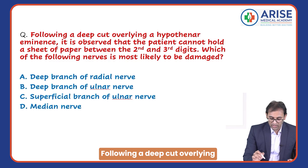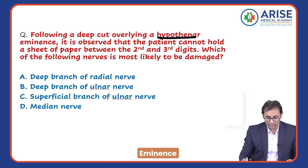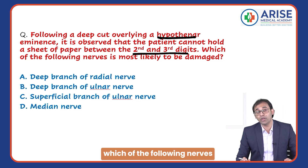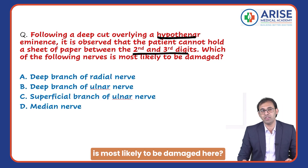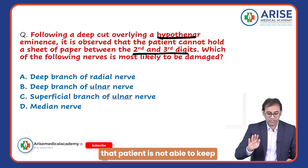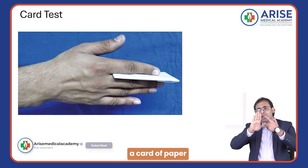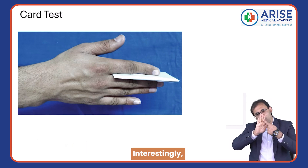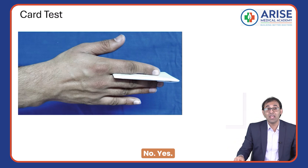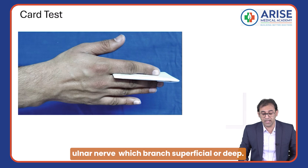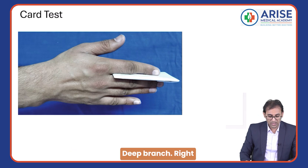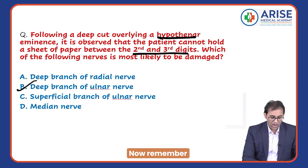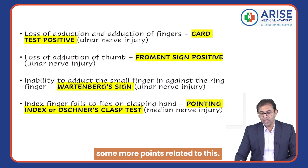Following a deep cut overlying the hypothenar eminence, it is observed that the patient cannot hold a sheet of paper between the second and third digits. The examiner is asking why the patient is not able to keep a card of paper between the fingers. The interossei are supplied by which branch? The answer is the deep branch of the ulnar nerve.